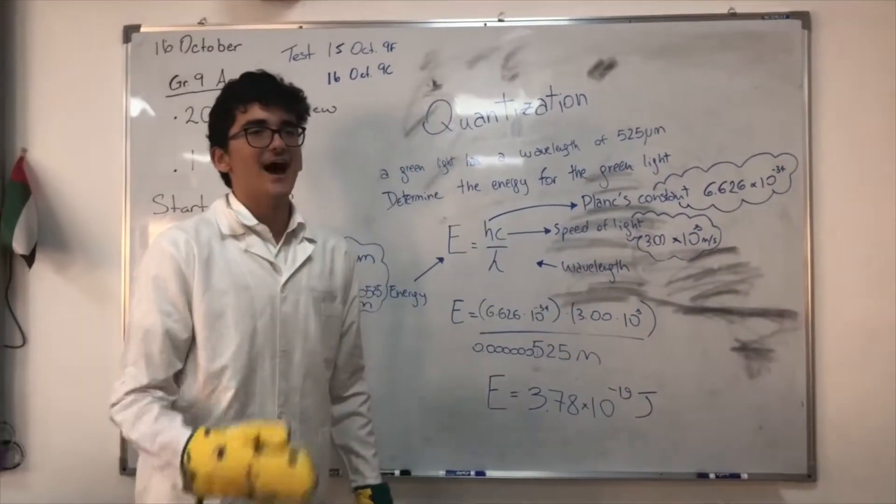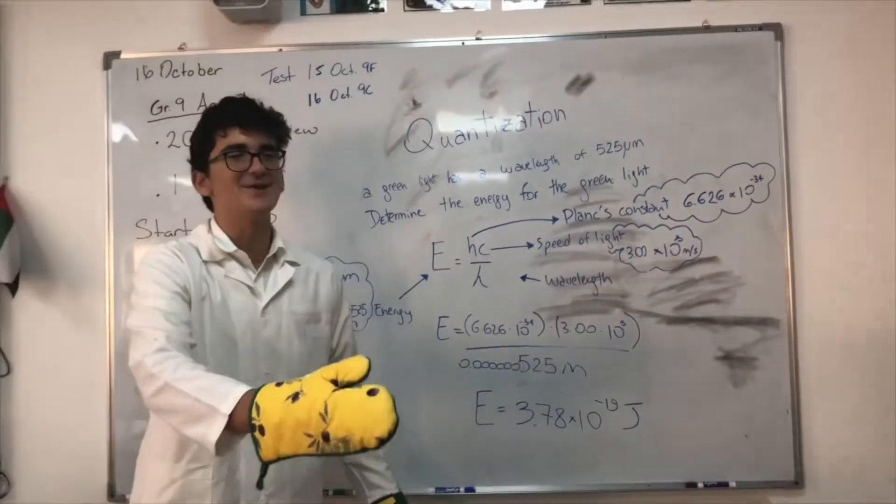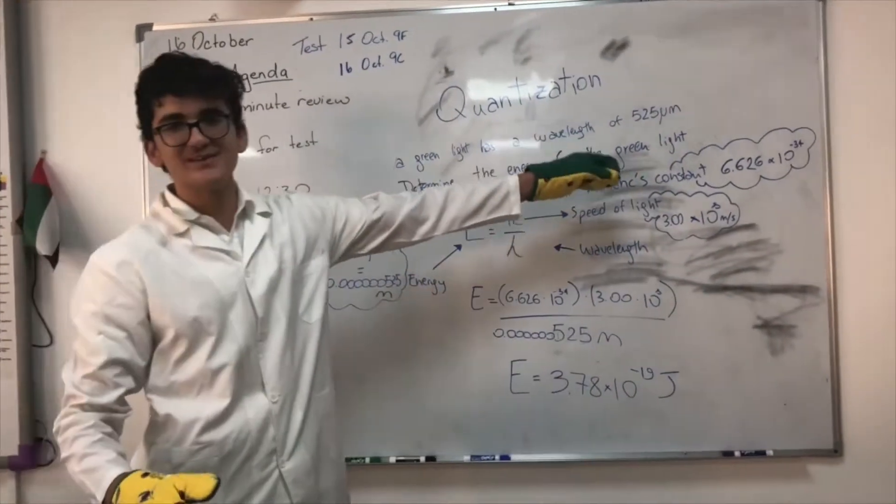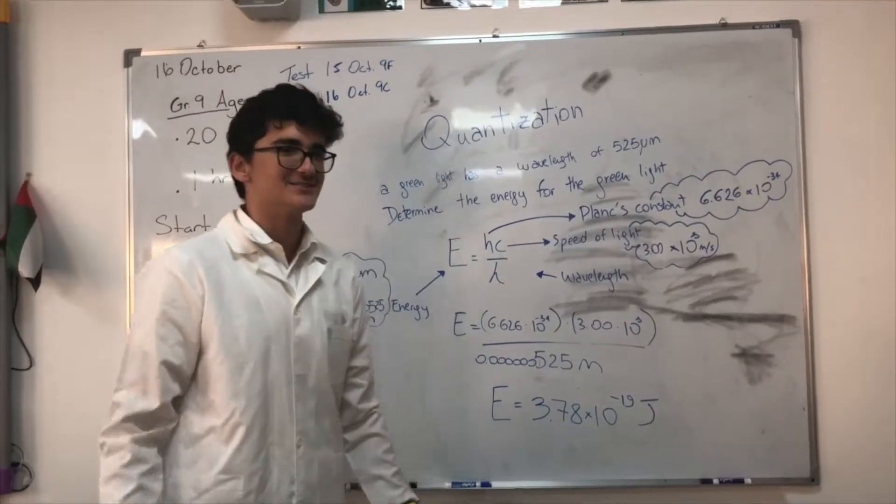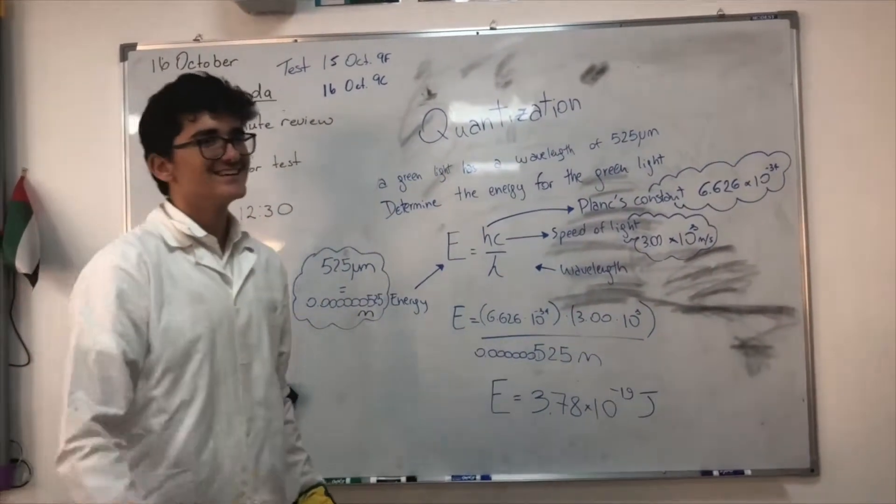Why are there so many zeros? I will explain that right now, student. Be quiet. Okay. You have to convert the nanometers into meters because it's SI units. Oh, okay. Understand? Yeah. Good.